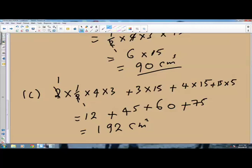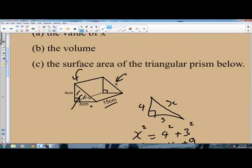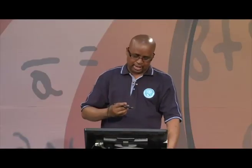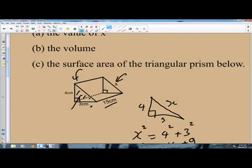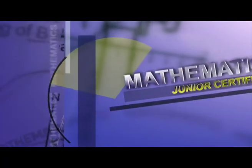To find the surface area of a triangular prism, we add the areas of the individual faces. Calculate the area of each face and then add them all together — that gives you the total surface area of the prism. Let's go for a short break. Welcome back. We are revising Junior Certificate Mathematics Paper 2, where you are expected to use a calculator.